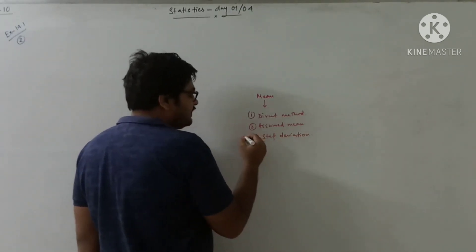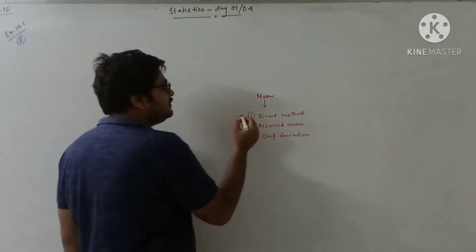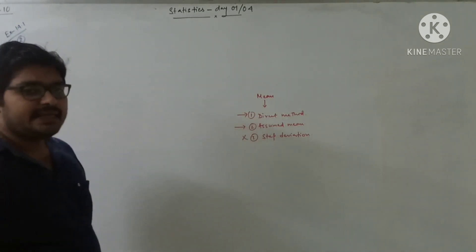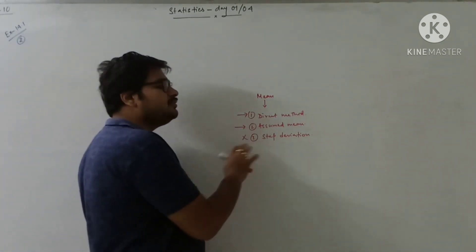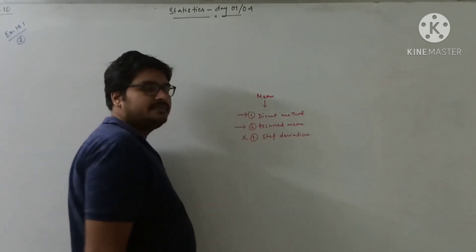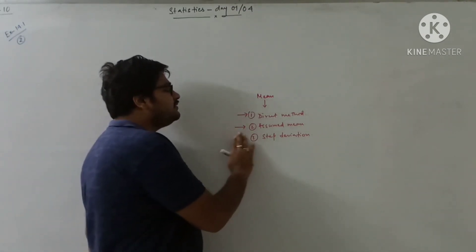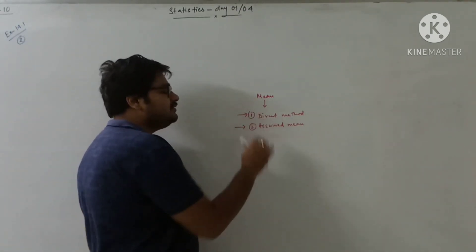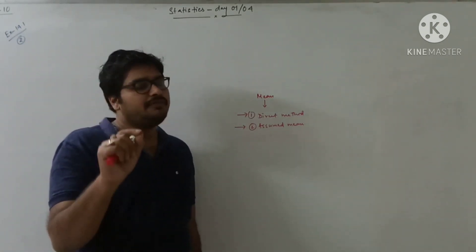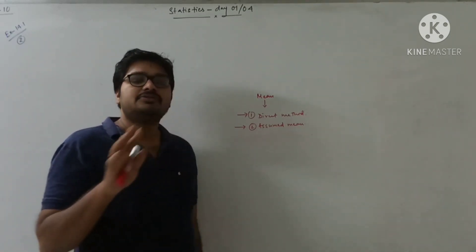In our syllabus, the step deviation method has been removed. So the two methods I am going to teach are the direct method and the assumed mean method. Though I can say the step deviation method is not so difficult — it is also related to these two methods — but since it has been removed, we are not going to discuss it. So only these two methods. I will take a single sum first with a continuous grouped frequency distribution table and solve it using both methods.